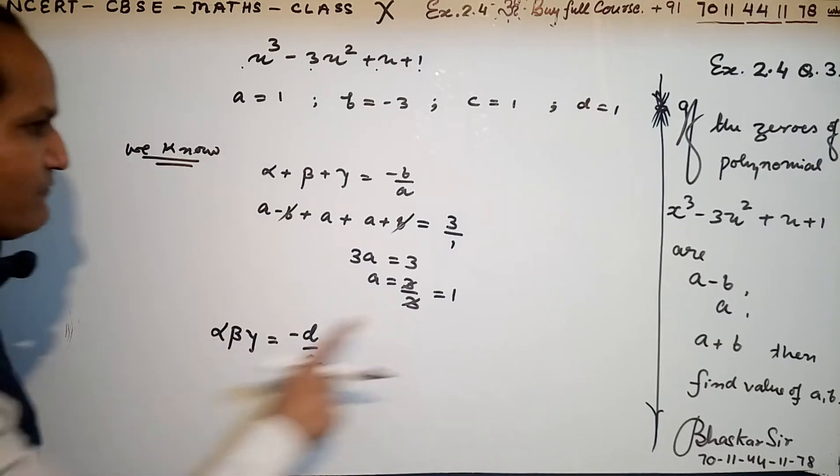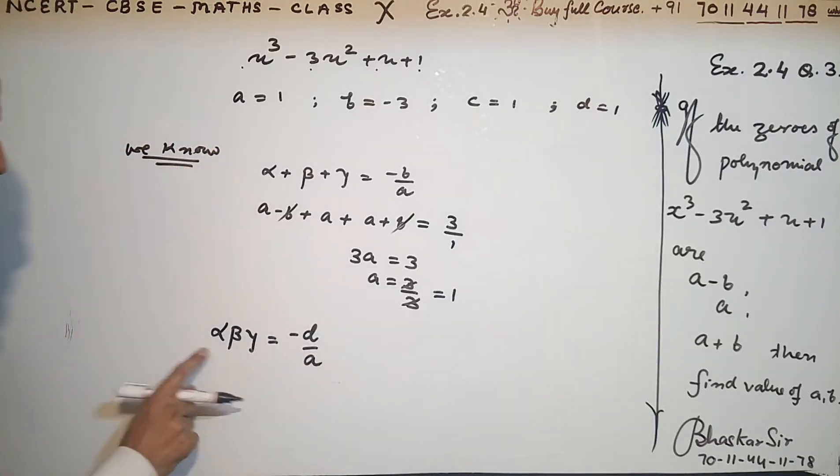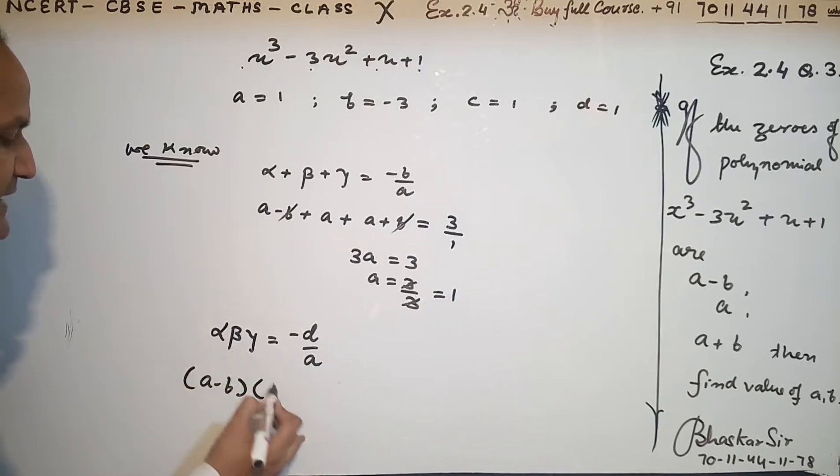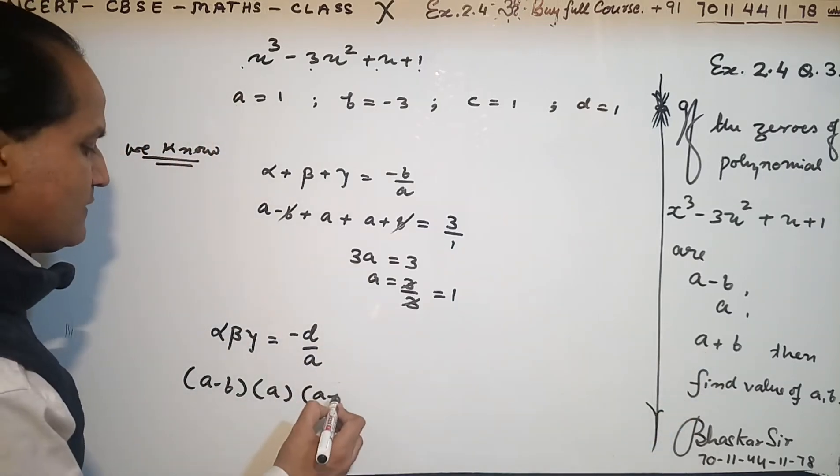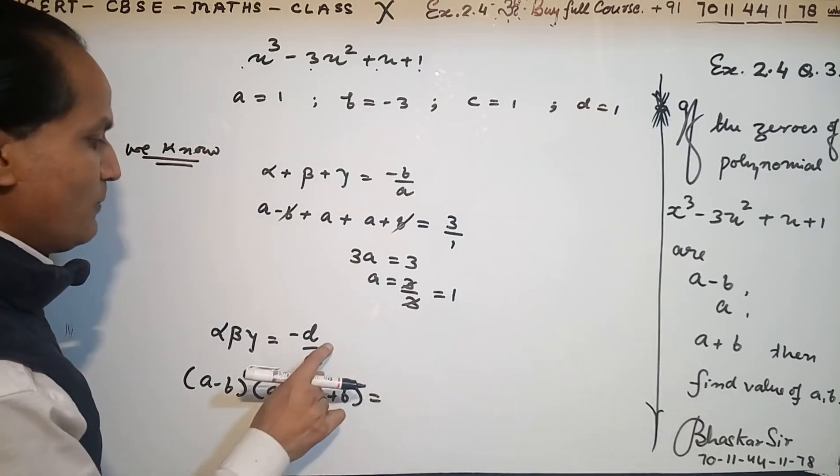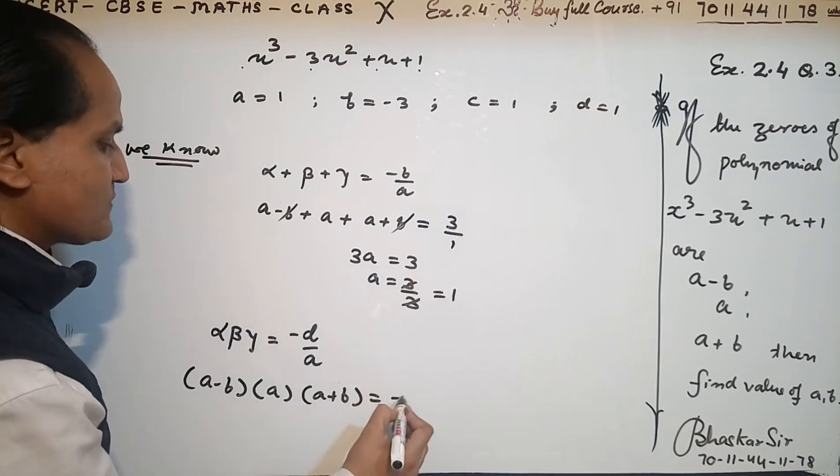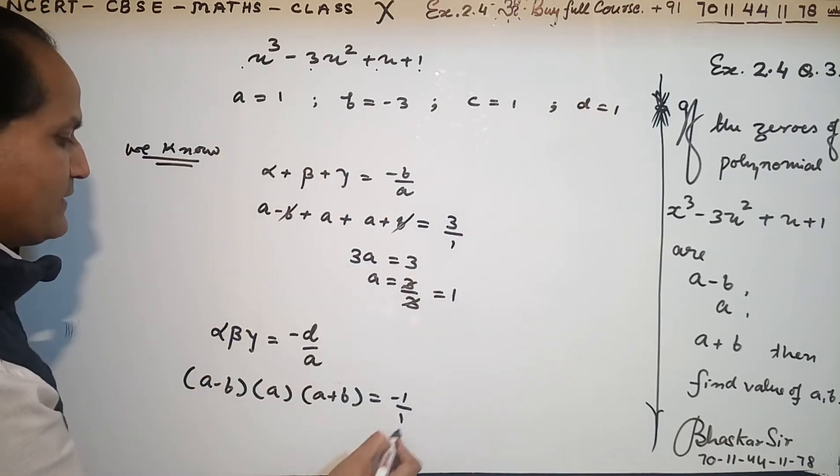α is a - b, β is a, and γ is a + b. So (a - b)(a)(a + b) = -1/1 = -1.